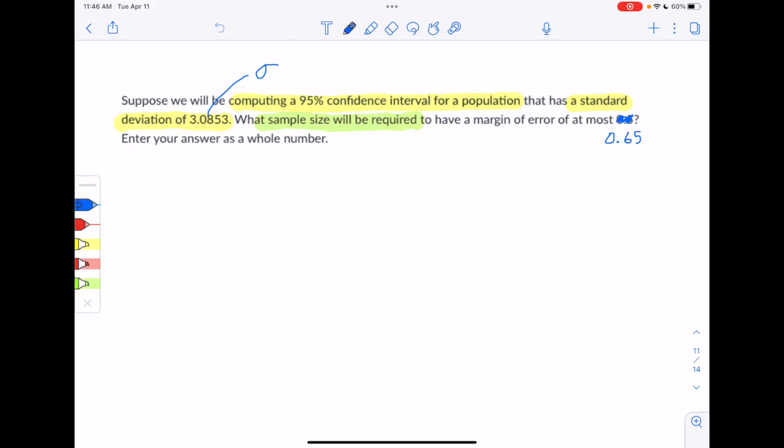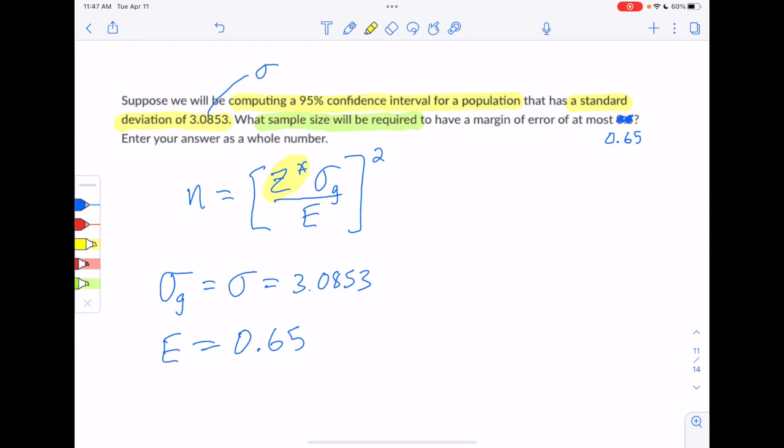All right, so the formula that we just decided we're going to use is n equals z star times sigma g divided by e all squared. So we've got to start gathering together that information. So what is our guess at sigma? Well, we actually know sigma. So that's going to be our guess at sigma, 3.0853. What margin of error do we want? They gave us that. They said we want a margin of error of at most 0.65. So the one piece that remains is z star.